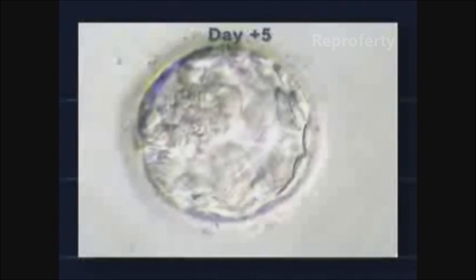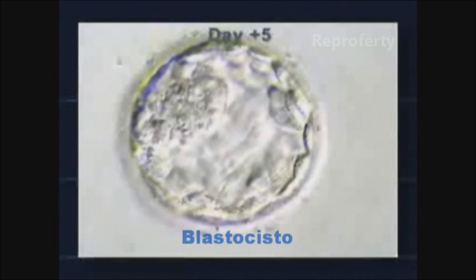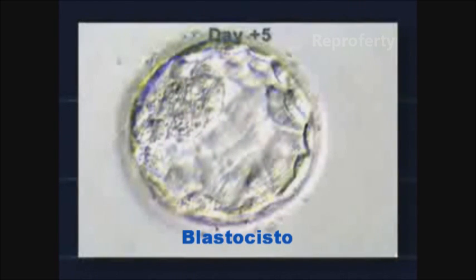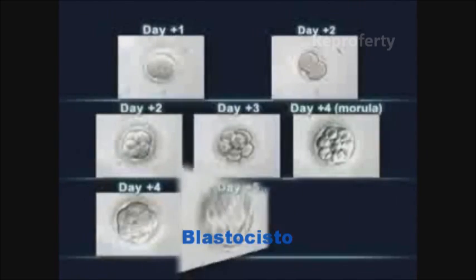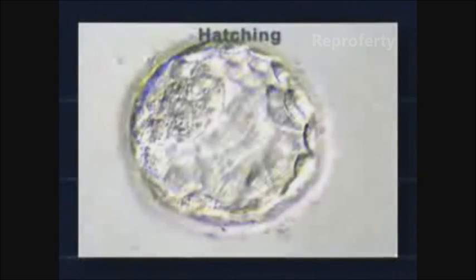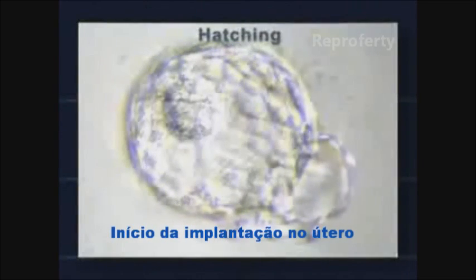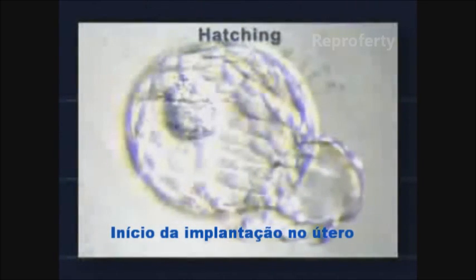On day five, the embryo contains more than 100 cells. In the center, there is a fluid-filled cavity. Finally, the blastocyst will shed the membrane that surrounds it. This is called hatching.